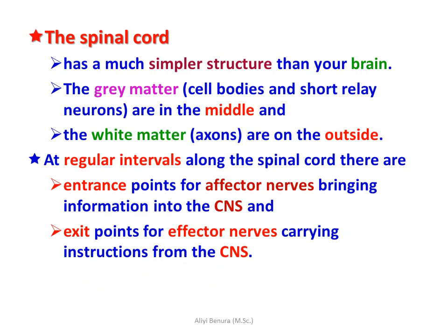The spinal cord has a much simpler structure than the brain. In the spinal cord, the gray matter — cell bodies and shorter dendrite nerves — is in the middle, and the white matter of axons is on the outside. This is the opposite of the brain. At regular intervals along the spinal cord there are entry points for afferent nerves bringing information to the CNS, and exit points for efferent nerves carrying instructions from the CNS.